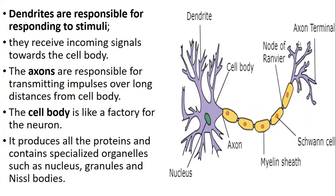The impulse travels until it reaches the end where it meets a muscle. The impulses go straight into the muscle, causing muscle contraction through innervation, producing the appropriate response.